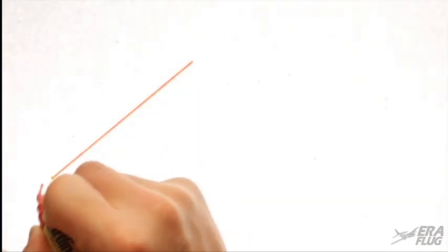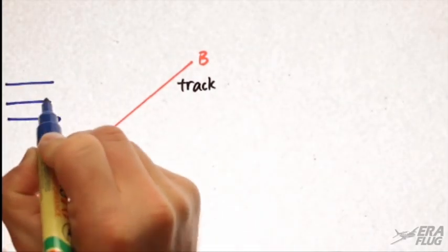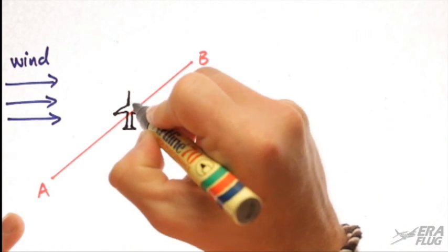Remember, in your calculations, a track is the aircraft path over the ground and remains unchanged between two places, whereas a heading can change depending on the wind.